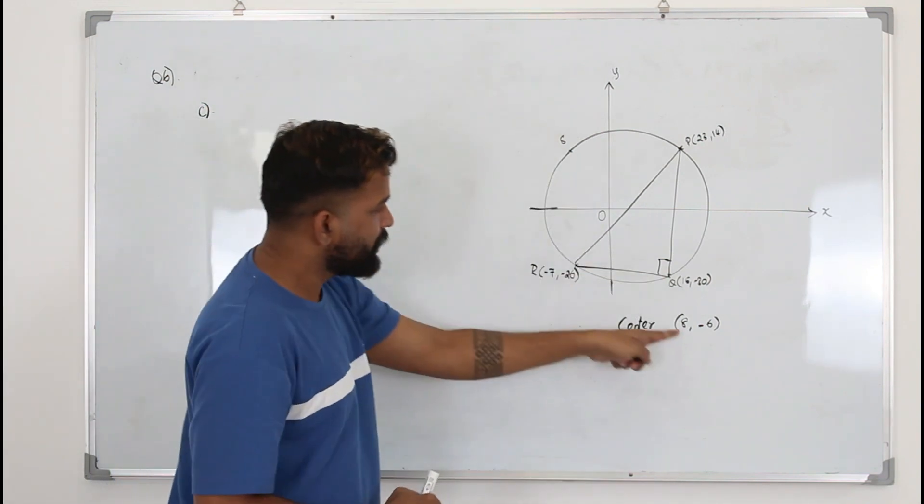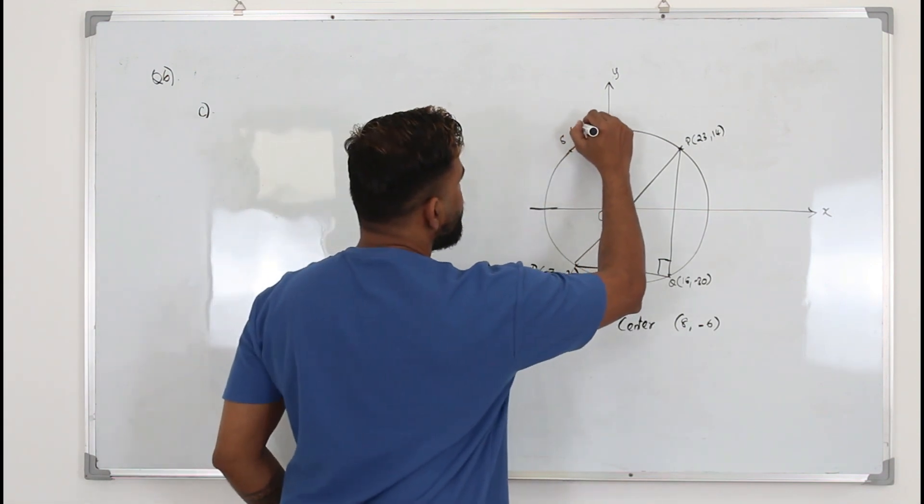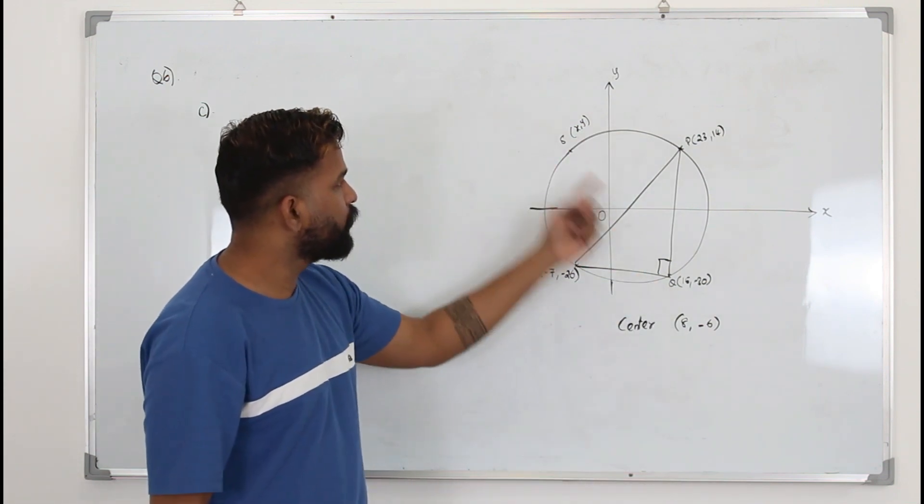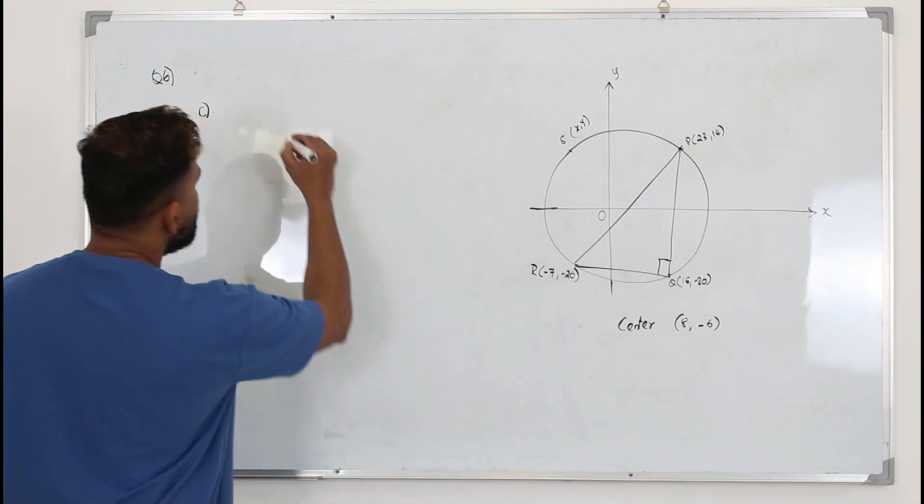Now we know the center, 8 comma minus 6, we don't know this point, maybe take it as X and Y. So the center of, the midpoint of Q S is the center of the circle. So how do you find midpoint?